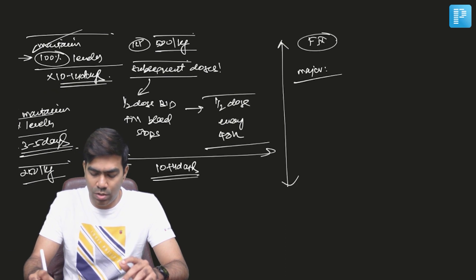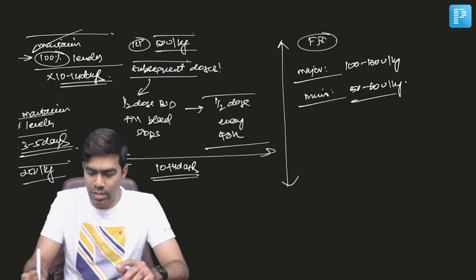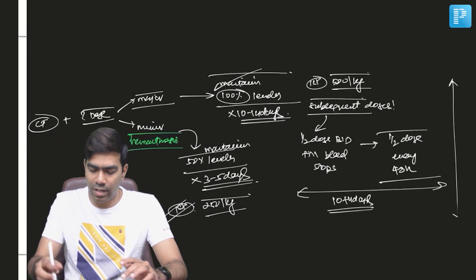So in case of major bleeds, the dosing will be 100 to 120 units per kilogram. If you're dealing with a minor bleed or hemarthrosis, dosing will be 50 to 60 units per kilogram. As you can see, the dosage will be slightly double that of factor 8.